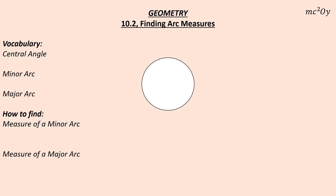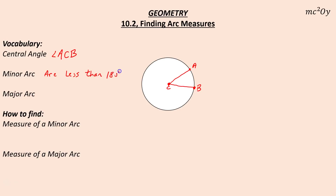We're going to talk about finding arc measures today. First we need to know some vocabulary, so I'm going to use a picture to help describe some of this vocabulary. A central angle is an angle that goes from the center of the circle. Let's say we call this circle C, and we draw a radius out to point A and another radius out to point B. What we have is the central angle ACB. A minor arc is an arc less than 180 degrees — that is a minor arc.